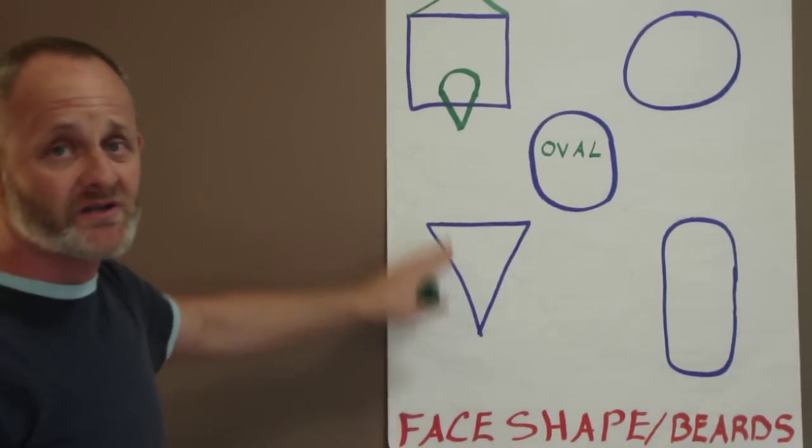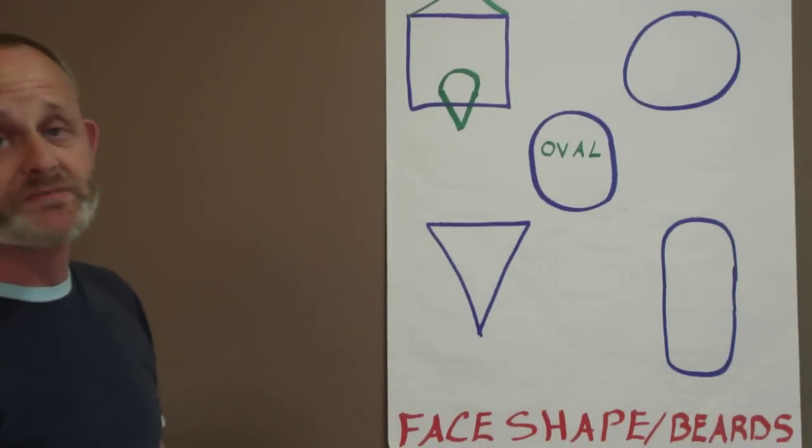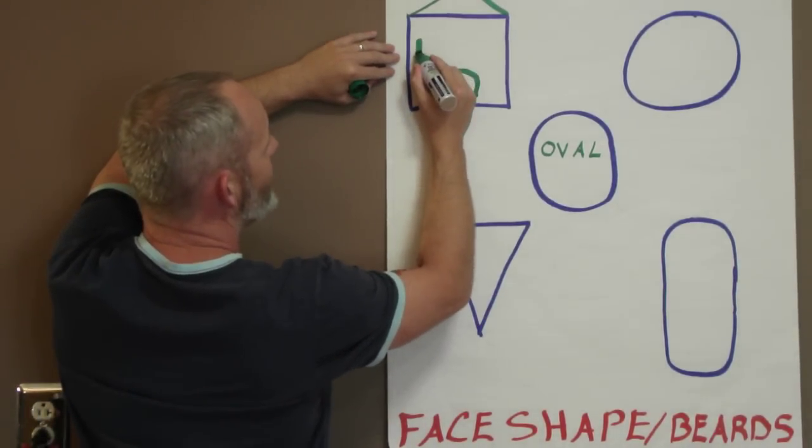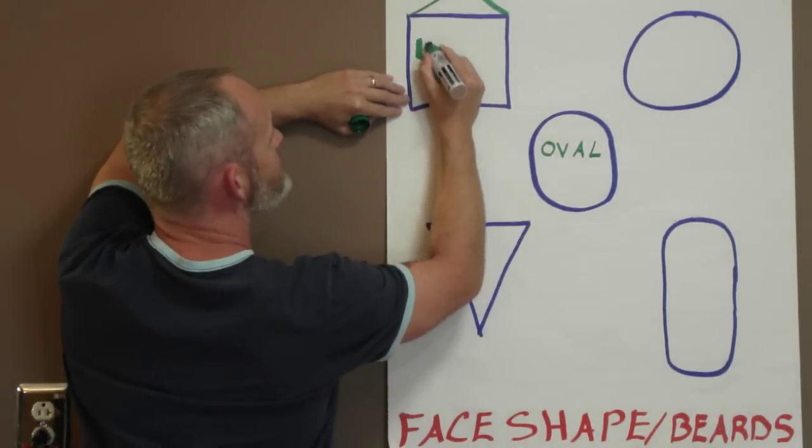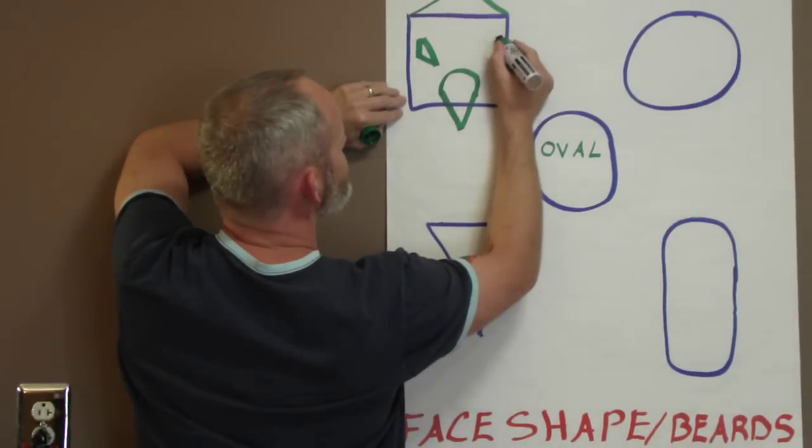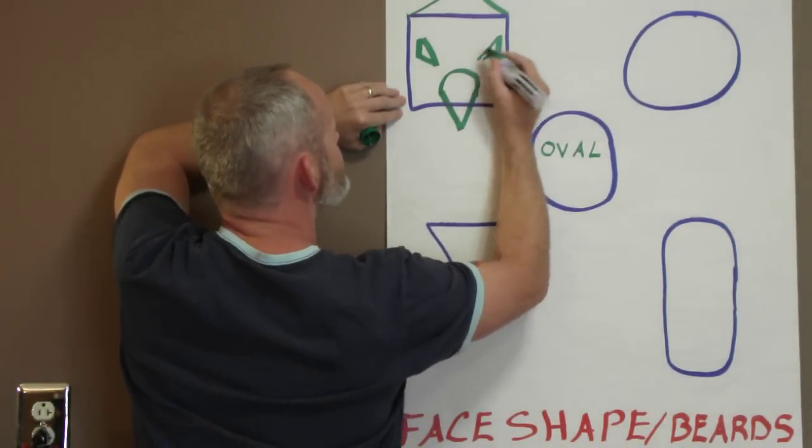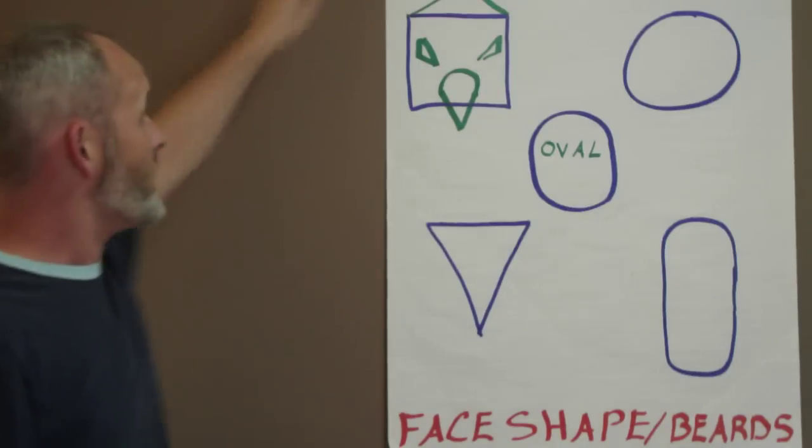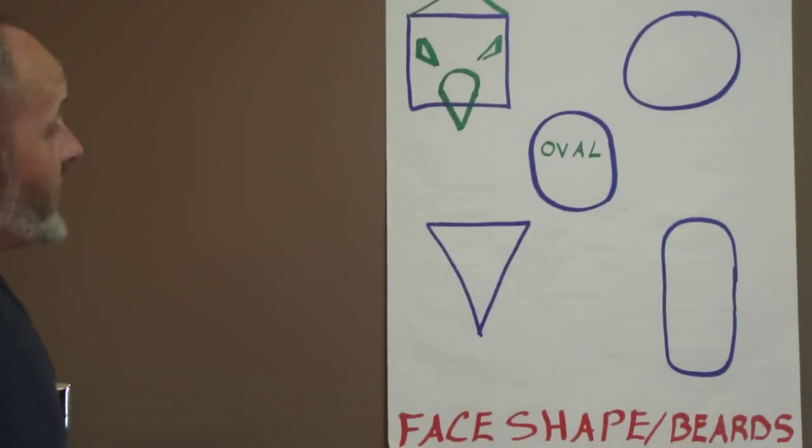Would we want to put any big, thick sideburns on Mr. Blockhead? No, absolutely not. If anything, you would want to do something very thin and fine and something that points inward. Thin and fine and points inward. That way, it draws the eye in versus around. You see such a big, square shape.